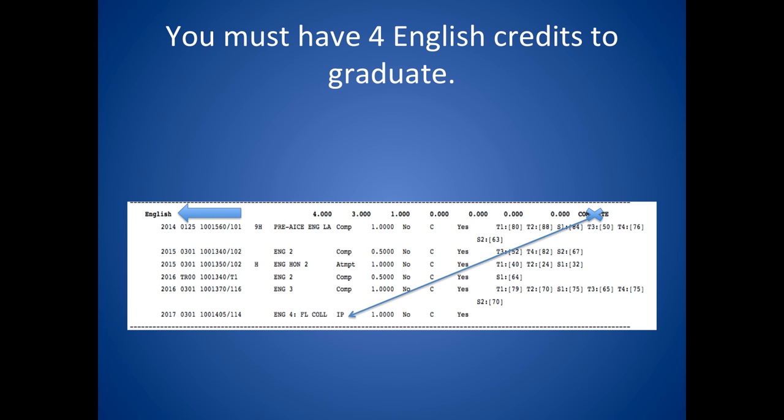You must have four English credits to graduate. You typically take an English class each year of high school. Note that the complete has been marked out because this student is currently taking his fourth English credit.